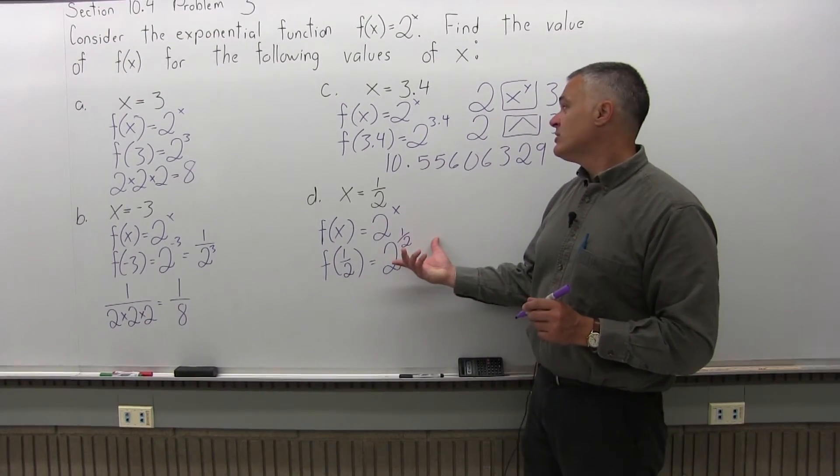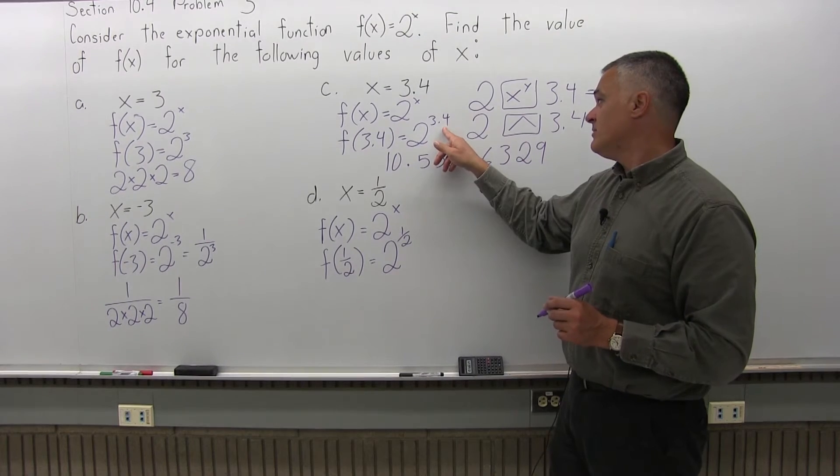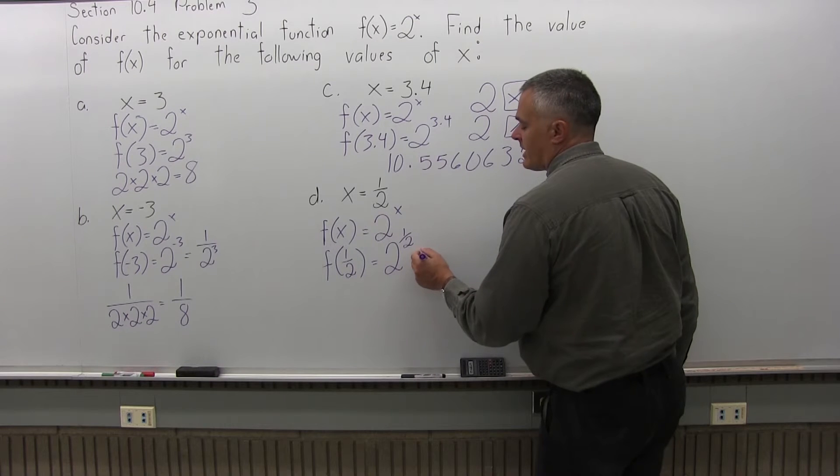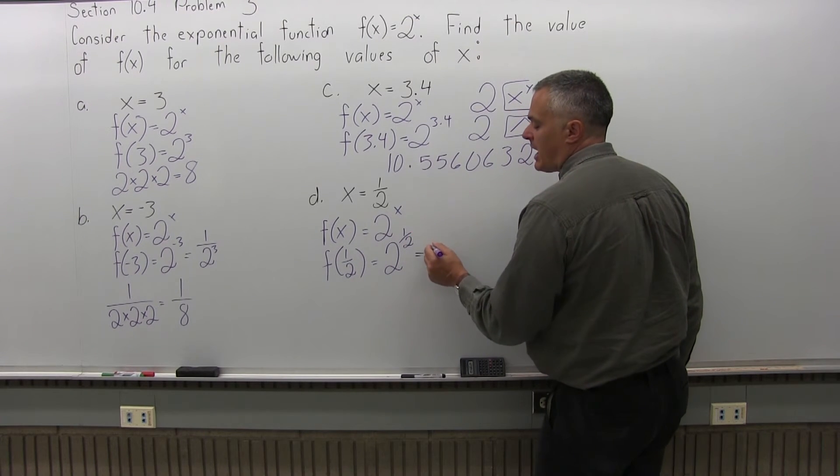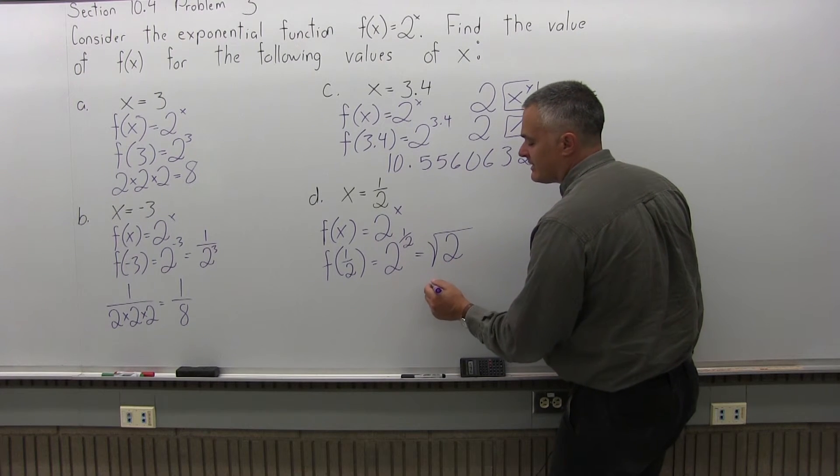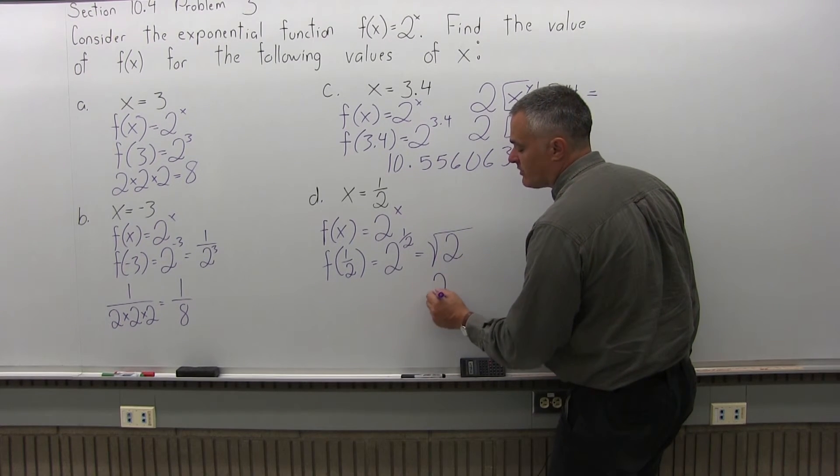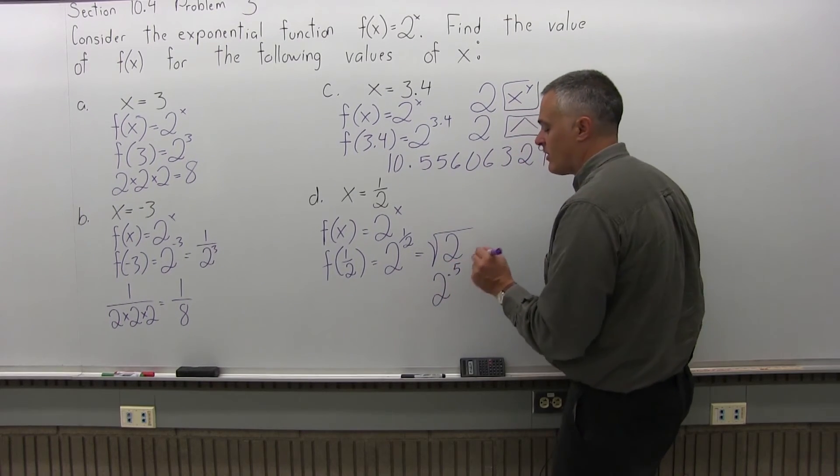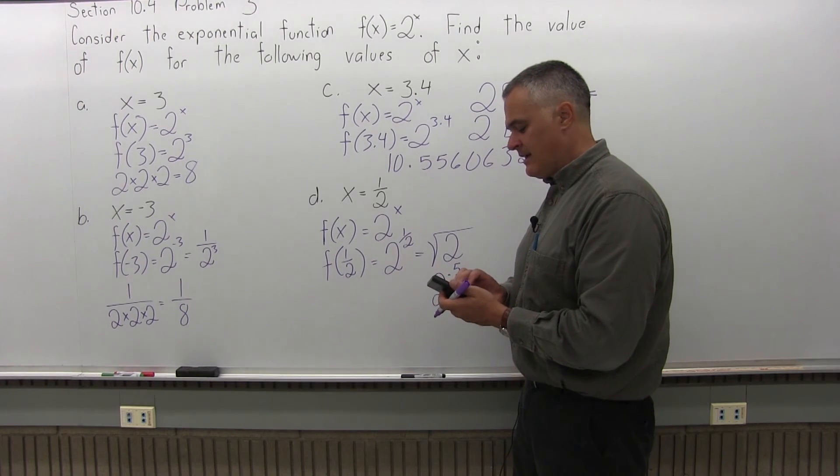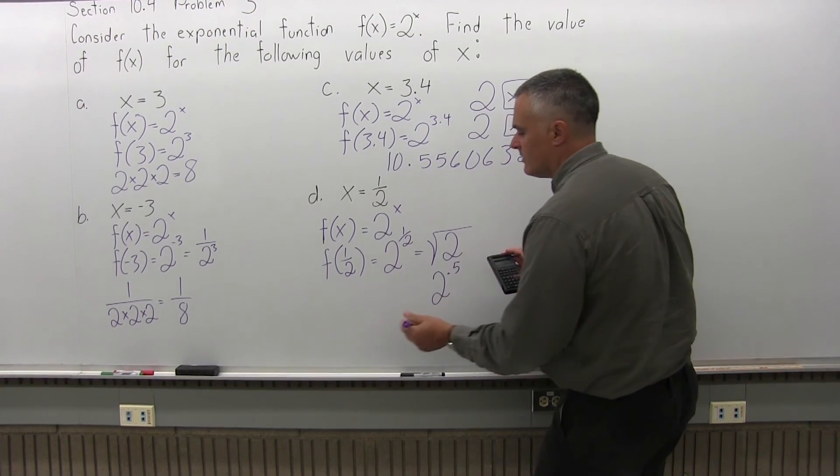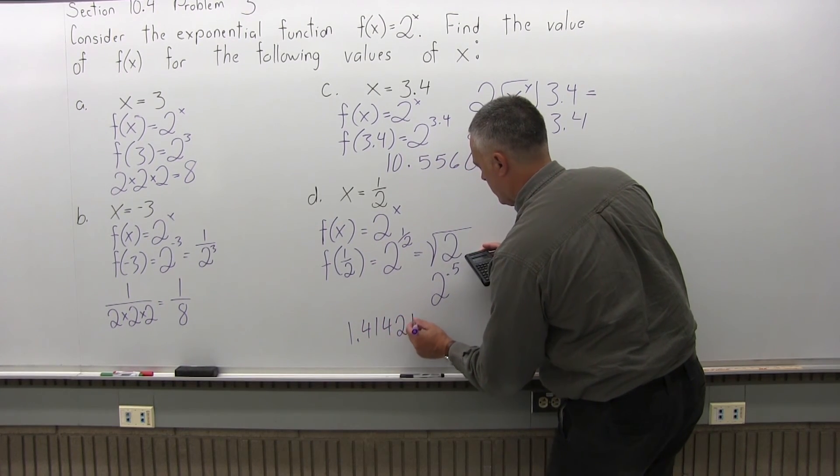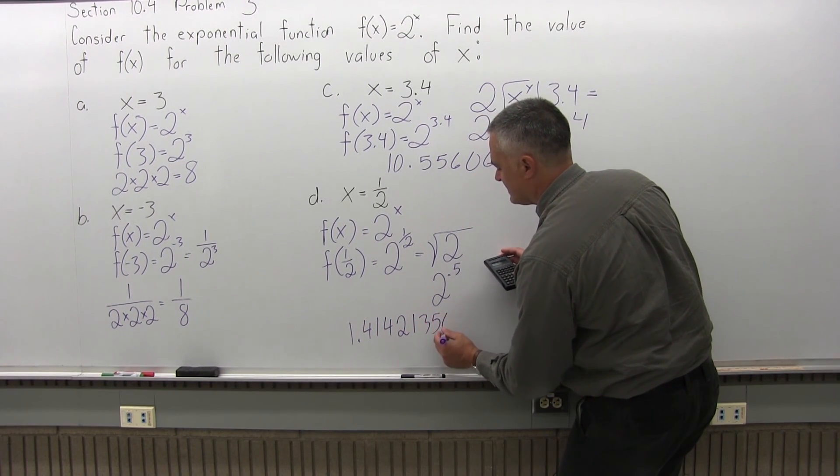So you could write that as 2 to the .5 power and use the exponent button on your calculator like we did for the previous part. Or, you might recognize that the one half power is really a square root. So you could do square root of 2. And you're going to get the same answer if you do square root of 2 or 2 to the .5 power on your calculator. So I'll use the square root button. And the square root of 2 is 1.414213562.